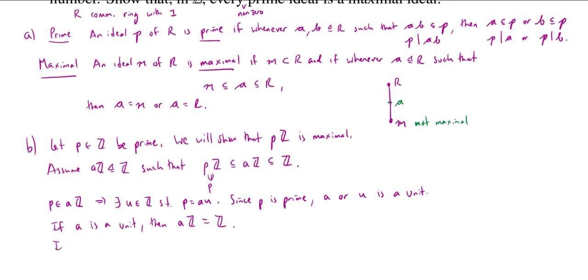What if U is a unit? If U is a unit, well, I've written here P equals AU, but U is a unit. So it has an inverse, and I could multiply by U inverse. And that would give me that P U inverse equals AU U inverse. But U U inverse is 1, so I just get A. This shows me that A is a multiple of P. So this means that A is in PZ. But PZ is an ideal.